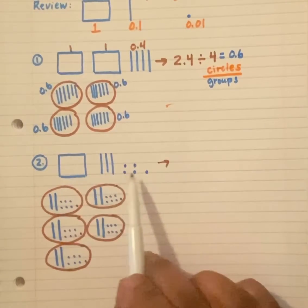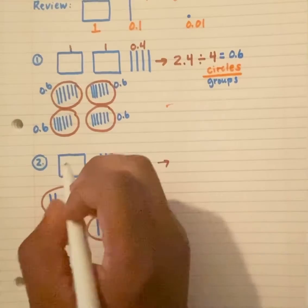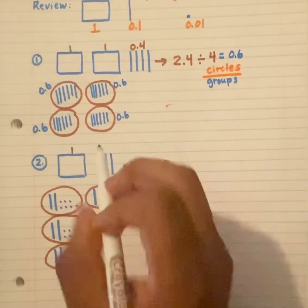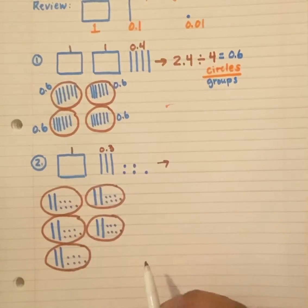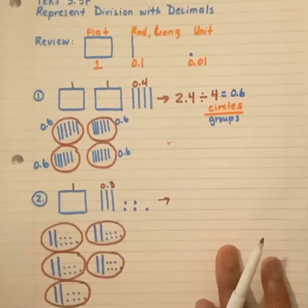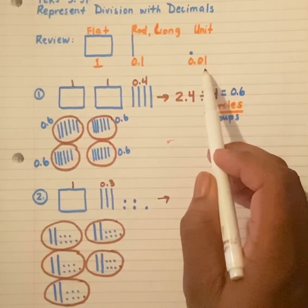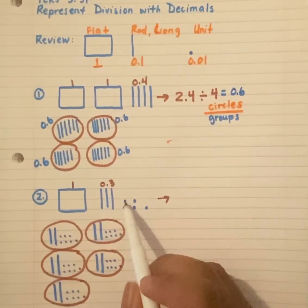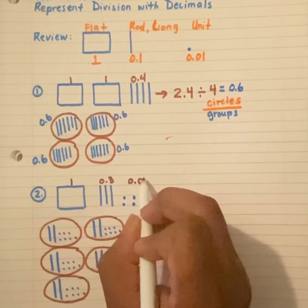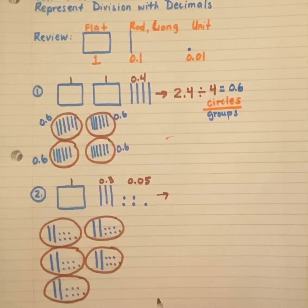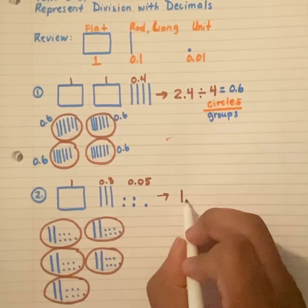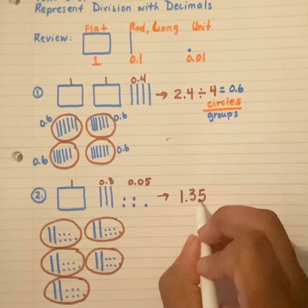What number is this? I have one, two, three rods. That means zero and three tenths. And what are these again? These are units. And what is the value of each unit? One hundredths or one penny. So one, two, three, four, five. That means zero and zero five. Five hundredths. So in reality, this model represents one and thirty five hundredths.